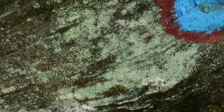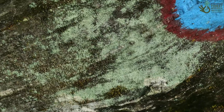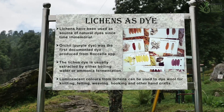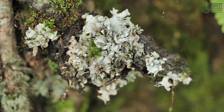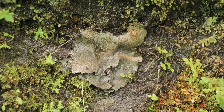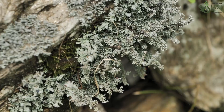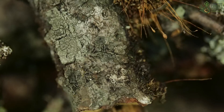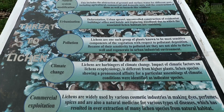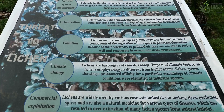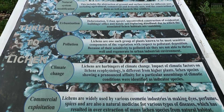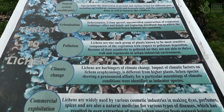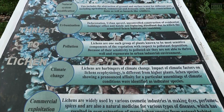Lichens have been used as a source of natural dyes since time immemorial. Today, lichen species are facing many threats and continue to decline from some areas of the Himalayan region because of natural system modification, urbanization, pollution, climate change, and commercial exploitation.